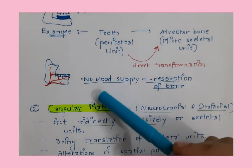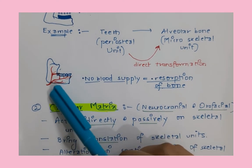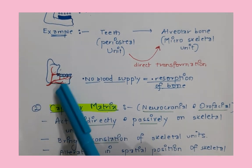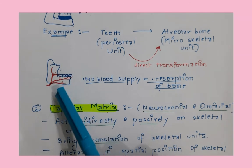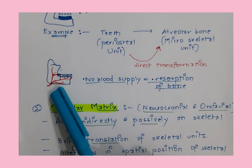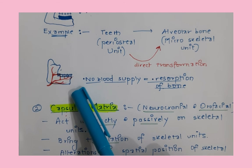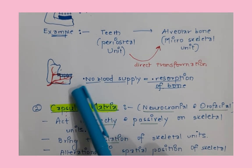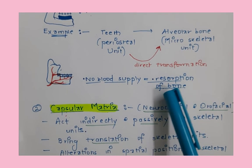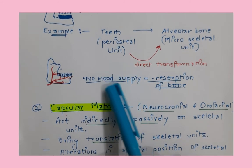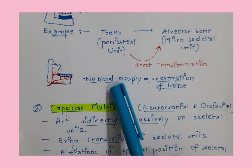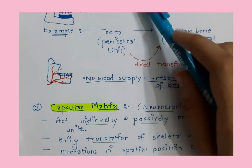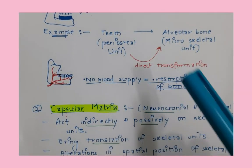Another component is blood supply. Blood vessels are a constituent of the periosteal matrix. When there is good blood supply to a particular bone, the bone is healthy and deposition is ongoing. But if there is no or limited blood supply — due to disease, anemia, or age — then resorption of bone occurs. Blood vessels, as part of the periosteal unit, influence the microskeletal unit, causing transformation of the skeletal units.